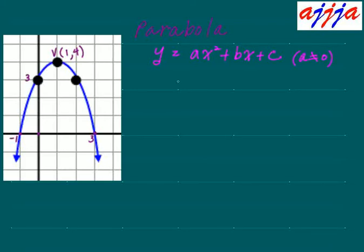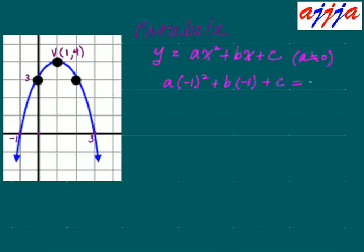We can make three equations because we have enough points right there. Let's plug the first one — the x-intercept. So negative 1, then 0. That means y is going to be 0. So I can write: a times negative 1 squared, plus b times negative 1, plus c equals 0.